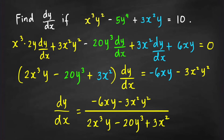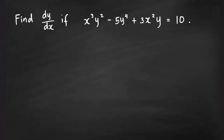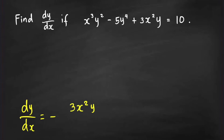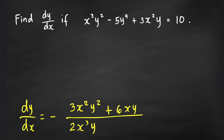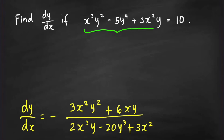Let me show you how to find dy/dx using the fast technique. Just by looking at the problem, I can determine the derivative of y with respect to x as equal to negative of (3x²y² + 6xy), all over (2x³y − 20y³ + 3x²). I considered the left-hand side as a function of two variables, x and y.